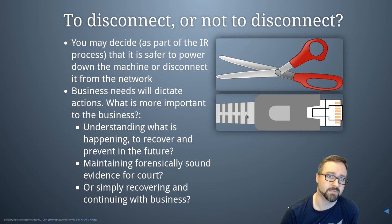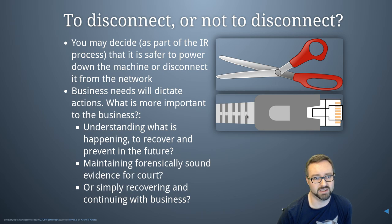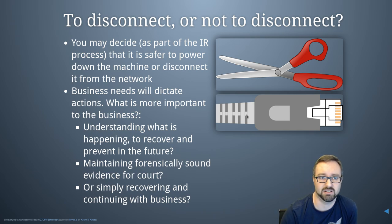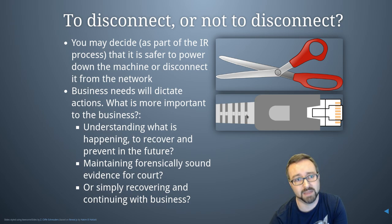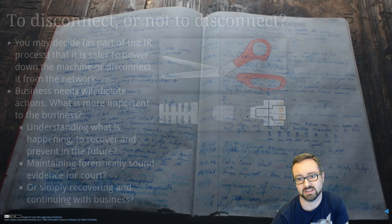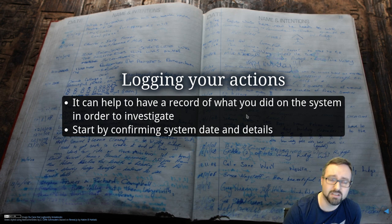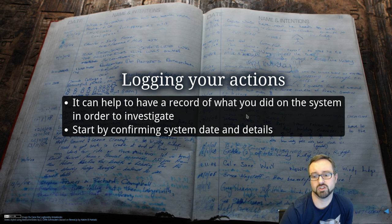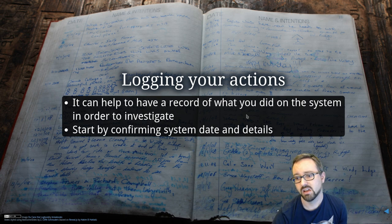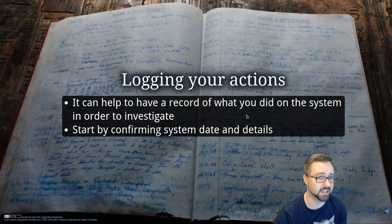It depends on what's more important: do you want to really understand what's happening so you can recover and prevent it in future, is it important to maintain forensically sound evidence for court, or are you simply trying to recover to continue with business? You'll need to do due diligence in terms of reporting — for example, under GDPR there are requirements that if you're aware of a breach you may need to notify authorities. Organizations need to be aware of their obligations and build that into their risk assessment and incident response process. It also helps your review process at the end, and if you're going to involve law enforcement, you should log your actions throughout your investigation and confirm system dates and details.